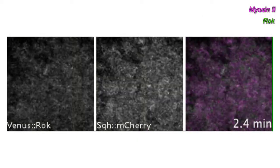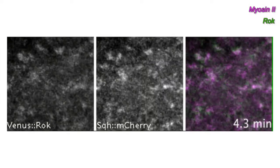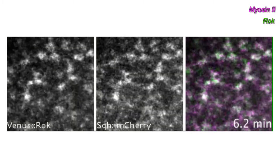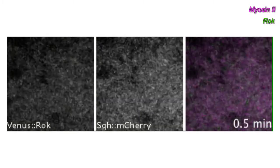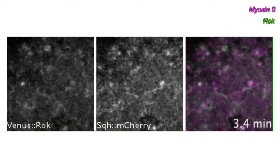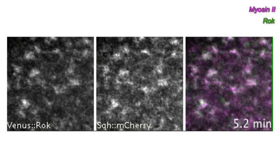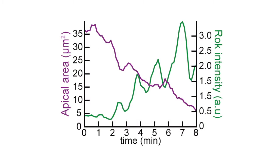Vasquez et al. noticed that ROCK also showed pulses of accumulation that coincided with the coalescence of myosin-2 in the medial apical domains of apically constricting cells. This suggested that, rather than simply activating myosin-2, ROCK might dynamically regulate the motor's pulsatile behaviour.